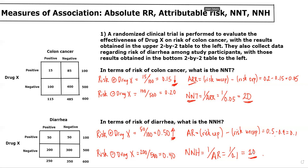In each of these cases, the first step is calculating the respective risks in each of the groups. Absolute risk reduction and attributable risk are basically the same concept — the only difference being that absolute risk reduction is used for beneficial exposures or treatments and is associated with the number needed to treat, while attributable risk is used for harmful exposures and is associated with the number needed to harm. So don't get confused trying to distinguish too much between these two concepts.